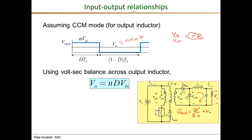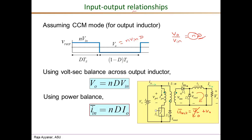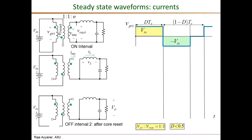Finally, using power balance to get the average input current: V_o times I_o equals V_in times I_in_average, so I_in_average equals V_o times I_o over V_in. Since V_o over V_in equals N times D, the average input current I_in is N times D times I_o, the output load current.